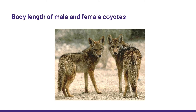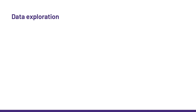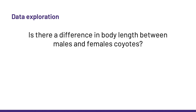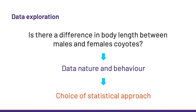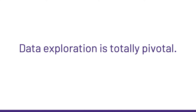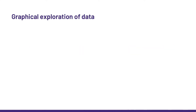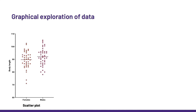Now let's try an example. We are going to look at the body length of coyotes. Let's say we have collected the data, and we want to know if there is a difference between males and females. Before thinking about stats, our first job is to explore our data, because our choice of a statistical approach will be driven, among other things, by the question we are asking, by the nature of our data, and by their behavior. So data exploration is totally pivotal. One cool way to have a first look at our data is a scatter plot — it shows all the data at once, and if we add the mean, we have a good visual reference to check out central tendency, or symmetry, hence normality.